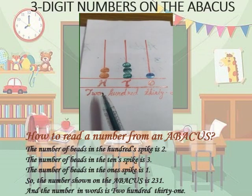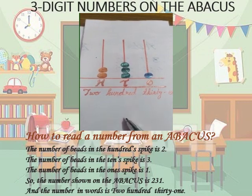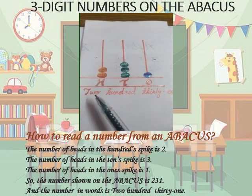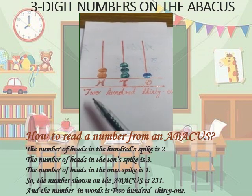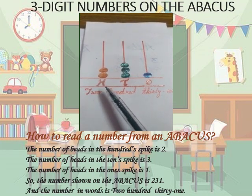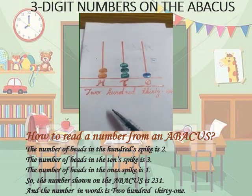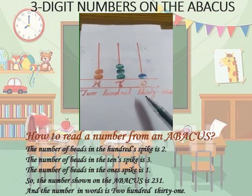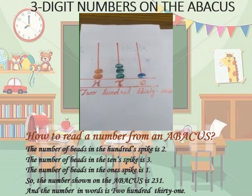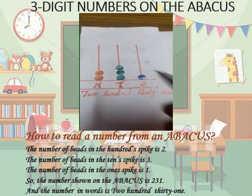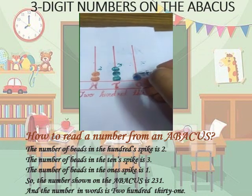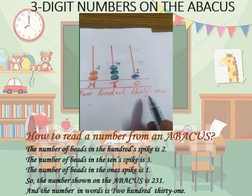Now we will understand how to read 3-digit numbers on an abacus. Look at the abacus shown here — it has 3 spikes showing 1s, 10s, and 100s, each having some beads. The number of beads in the 100s spike shows the number of hundreds — here it is 2. The number of beads in the 10s spike shows the number of tens — here it is 3. The number of beads in the 1s spike shows the number of ones — here it is 1. So the number we have got is 2, 3, 1 — that is 231.